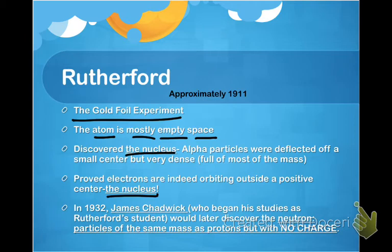Rutherford discovered that alpha particles were deflected off a small but very dense center, meaning all the mass was in that tiny nucleus at the center of the gold atoms. He proved electrons are orbiting outside of a positive center known as the nucleus. In 1932, James Chadwick — who began his studies as Rutherford's student — discovered the neutron: particles within the nucleus that had the same mass as protons but no charge.